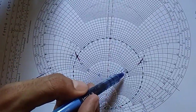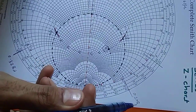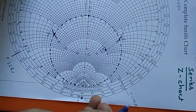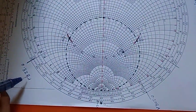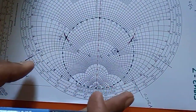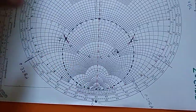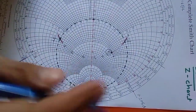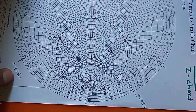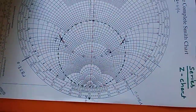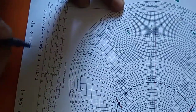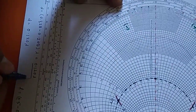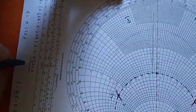We got two values: at ZL the value is 0.208 lambda, and at D2 the value is 0.328 lambda. The difference of these two values gives the distance where we have to insert the stub from the load. So D = 0.328 lambda minus 0.208 lambda — the distance of the stub from the load is 0.120 lambda.